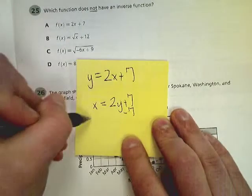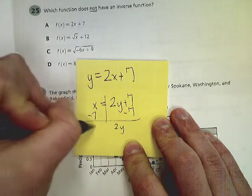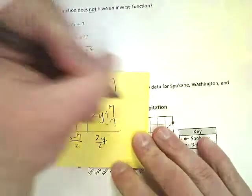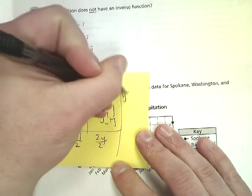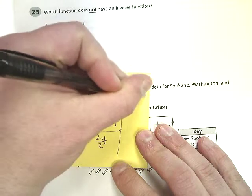So I'm going to subtract 7 here. I'm going to divide the whole thing by 2. So my inverse to this is y equals one half x minus 7 over 2.